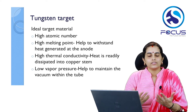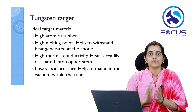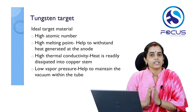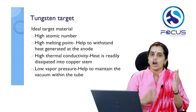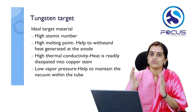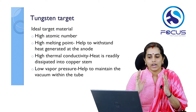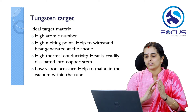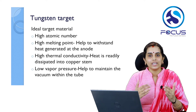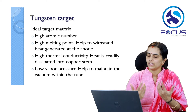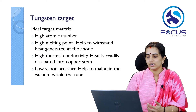Tungsten is considered the ideal target material for several reasons. It has a very high atomic number, so the X-rays produced are of very high quality. It has a very high melting point, helping it withstand the heat generated at the anode, since 99% of the electron beam striking the target is converted into heat. It also has high thermal conductivity, readily dissipating heat onto the copper stem, and a low vapor pressure, which helps maintain the vacuum within the tube.